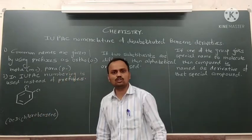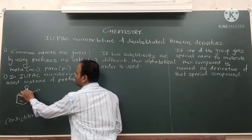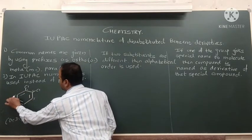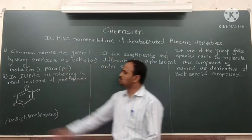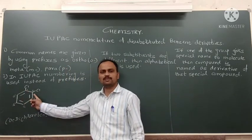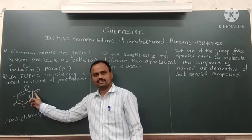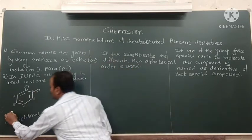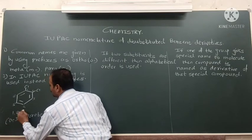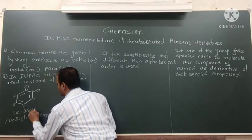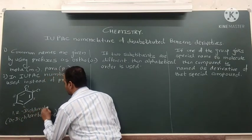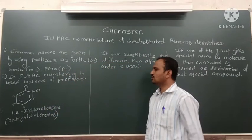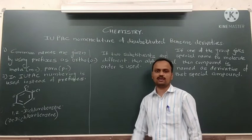In IUPAC nomenclature, we number the ring 1 through 6. The two chlorines are present on positions one and two. Therefore, the IUPAC name of this compound is 1,2-dichlorobenzene.